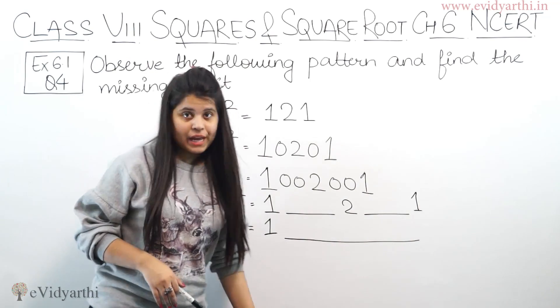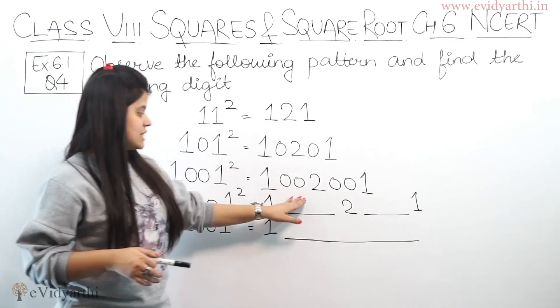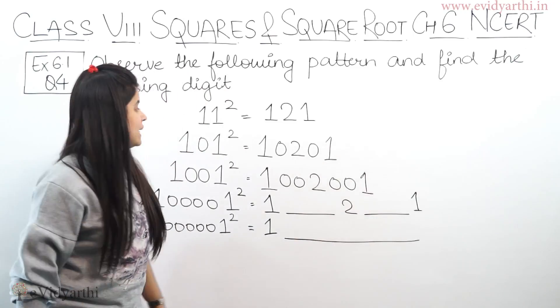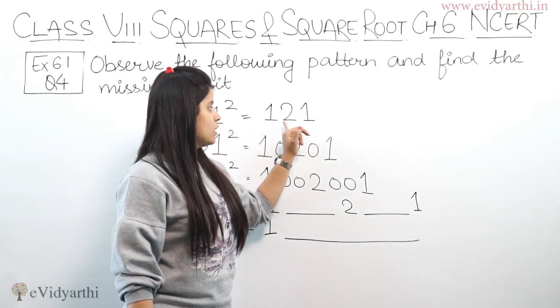Here you have a pattern given. You have to understand what is happening in this pattern. And then, where we have missing blanks, we will fill them out. The first one is 11 square equals 121.